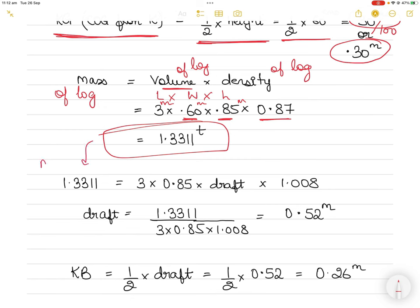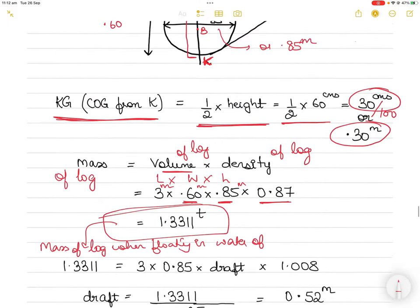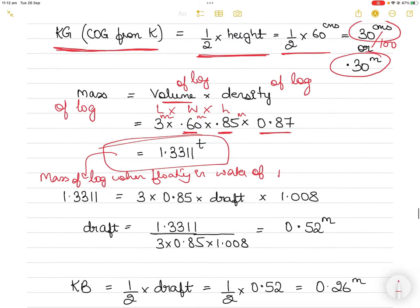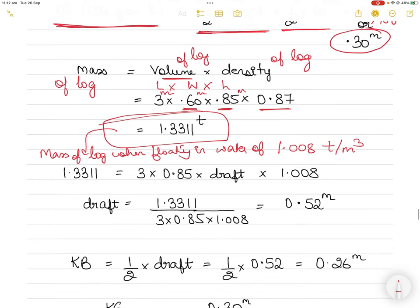Mass of the log when floating in water of density 1.008 ton per metric cube will remain unchanged at 1.3311. But how is it calculated? It is calculated by length by breadth by draft multiplied by density of water.